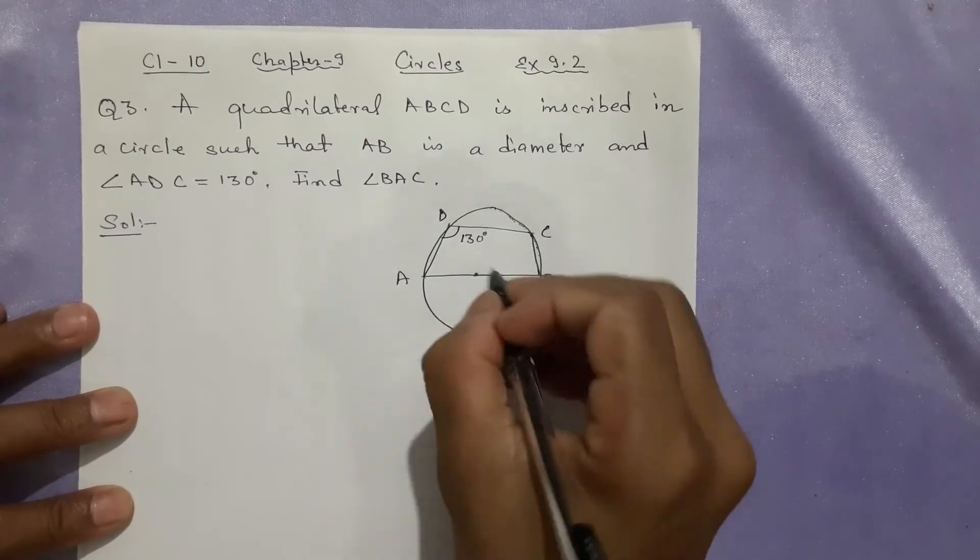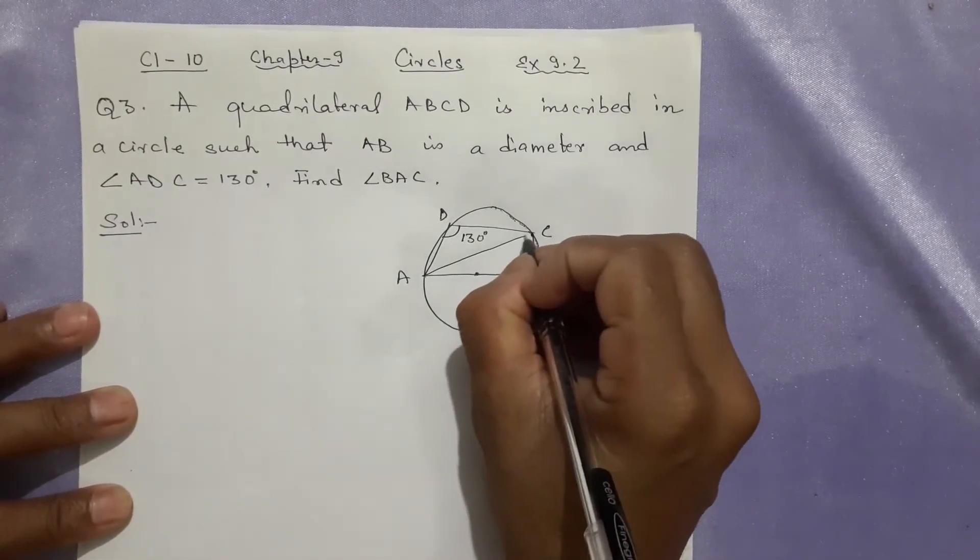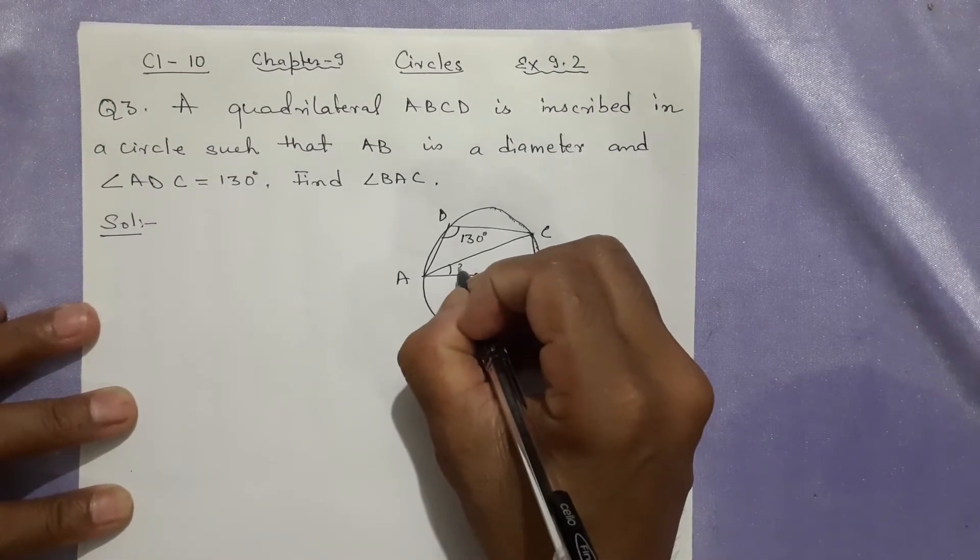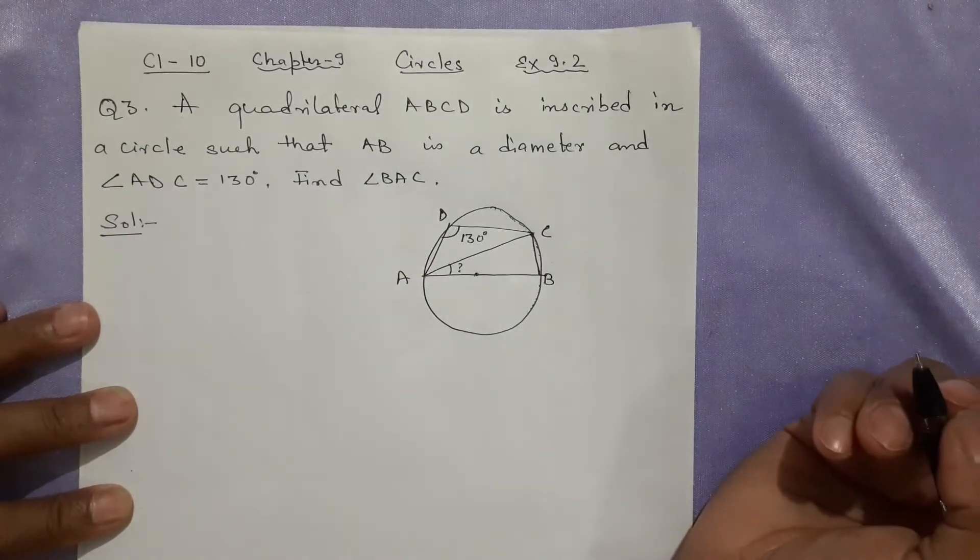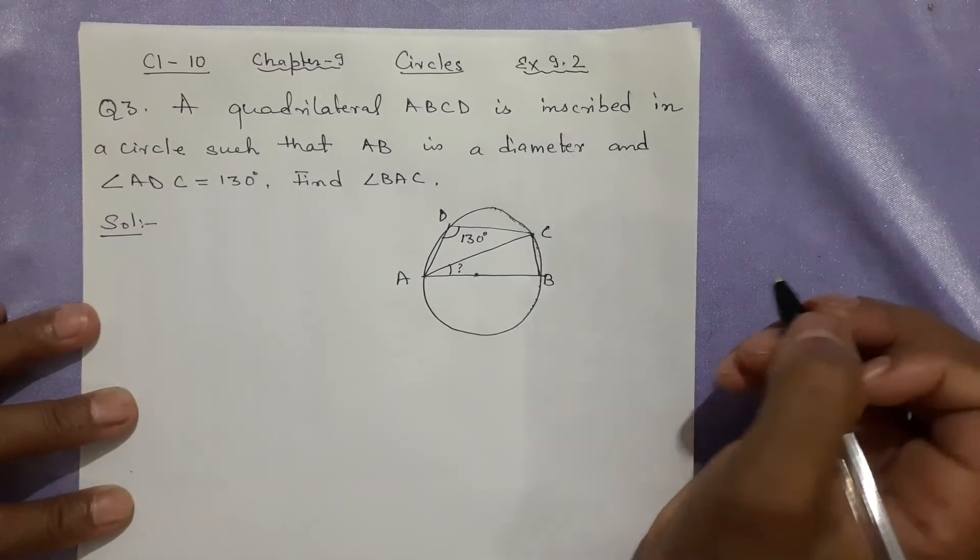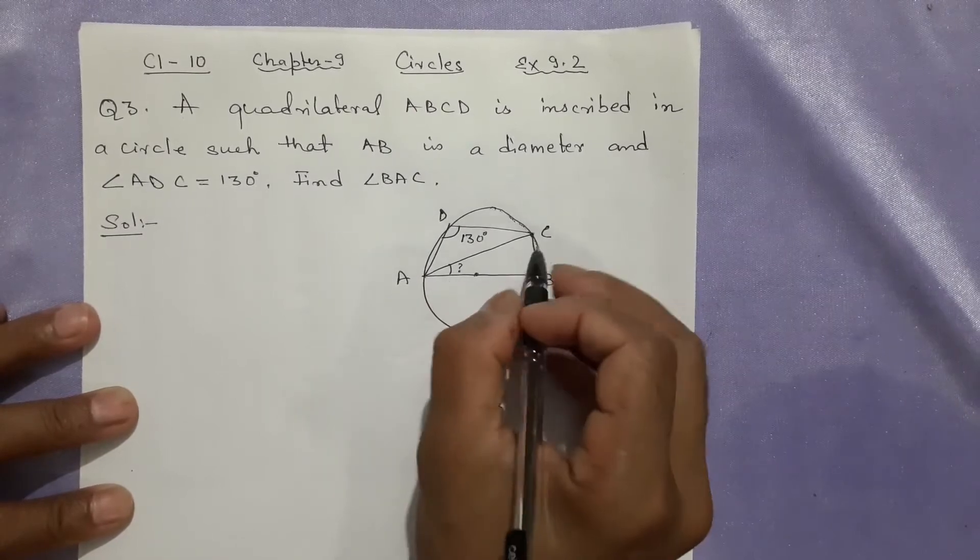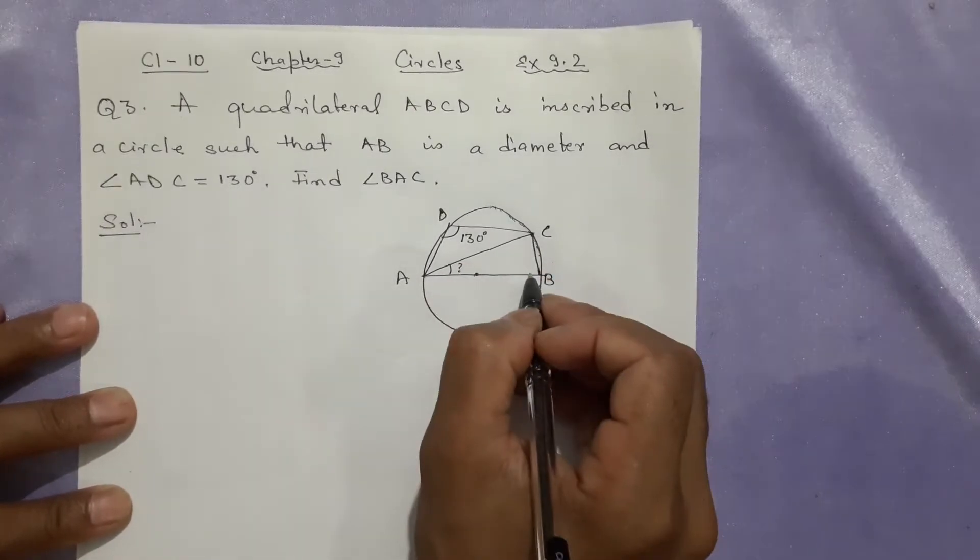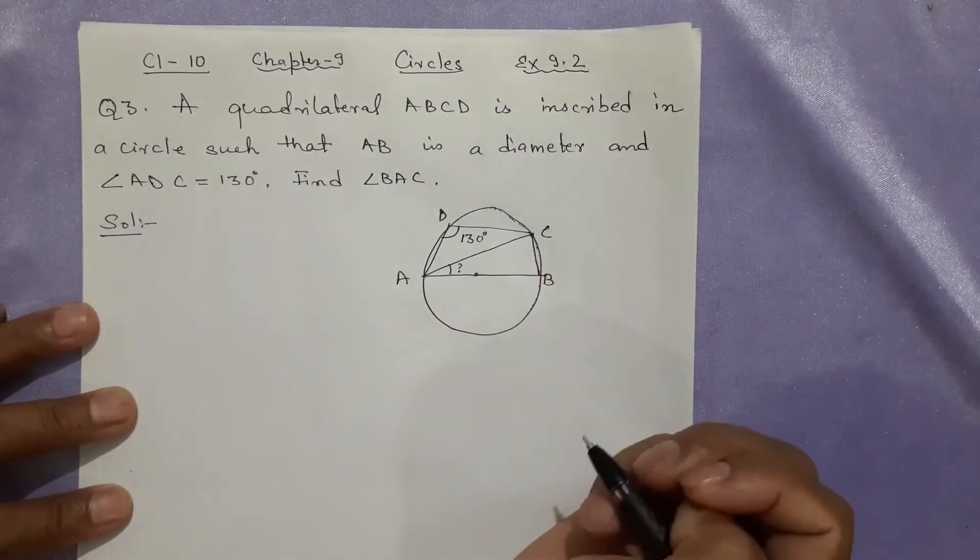You have to find angle BAC. That means this line is also joined here. This angle you need to find—angle BAC. You can already see the semicircle angle will be 90°. These angles have a relation; use those two things and you will easily get the answer.